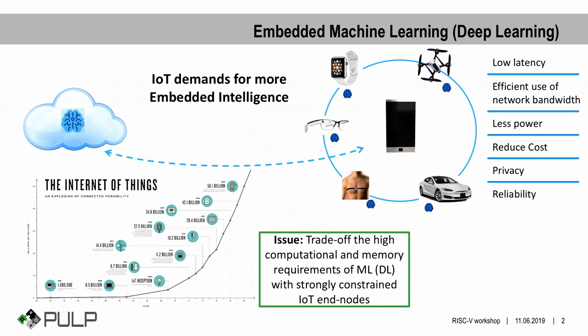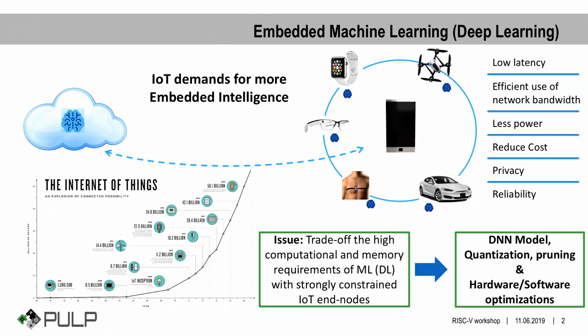The main problem for such deployment concerns the limited resources on IoT nodes, which usually consist of battery-powered microcontrollers. These limitations concern memory and computational capabilities, and of course the power budget. To make networks smaller and faster, we necessarily have to rely on quantization and pruning techniques, jointly with strong hardware and software optimizations and co-design, on which we'll concentrate during this talk.